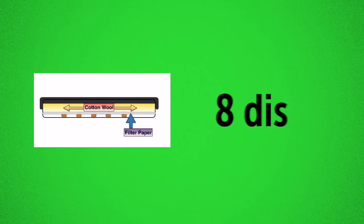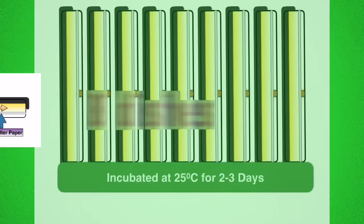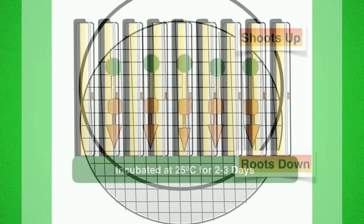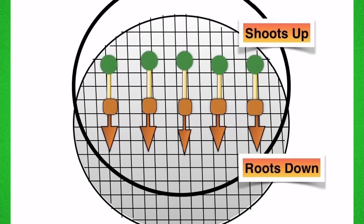This procedure was carried out for each of the eight dishes and then they were wrapped with parafilm. The dishes were all stacked on their sides and incubated at 25 degrees Celsius for two to three days. Stacking the dishes on their sides means that the shoots will grow up and the roots will grow down and this is just easy for measuring.